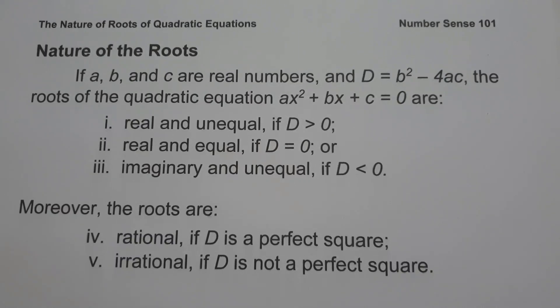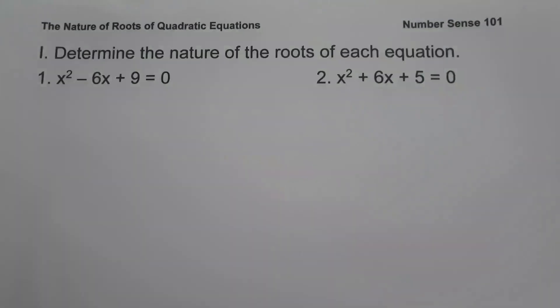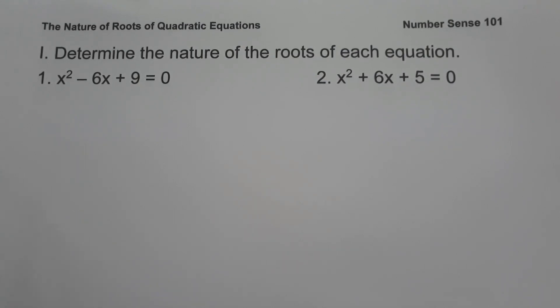So let's start and let's have an example. On the first set of examples, we are going to determine the nature of roots of each equation. On number 1, we have x squared minus 6x plus 9 equals 0.